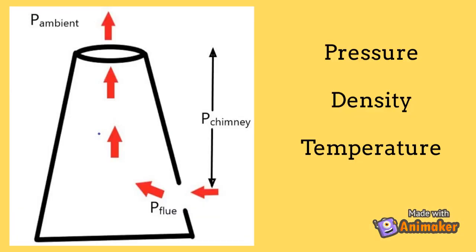The question is: what drives the flue gases from the bottom part of the chimney to the topmost part where it gets dispersed with the ambient air? Whether it is pressure difference, density difference, or temperature difference between the ambient gas and the flue gas — the answer is it is ultimately the pressure difference between the ambient air and the flue gas that drives the flue gas out of the chimney.